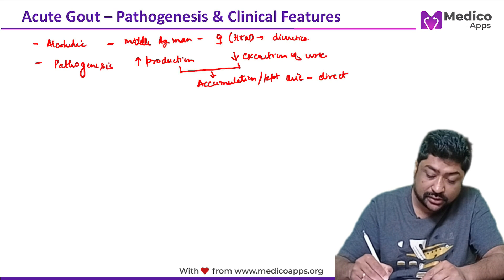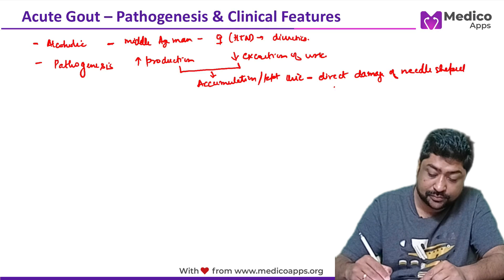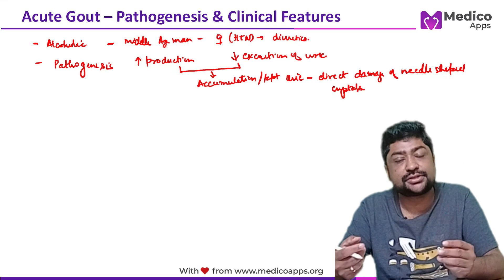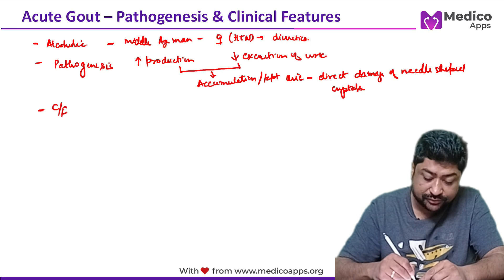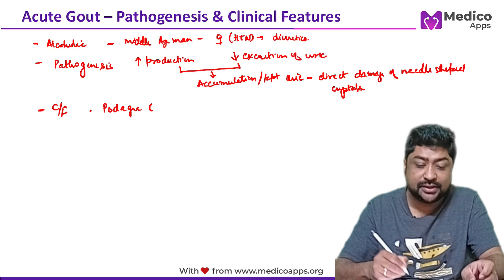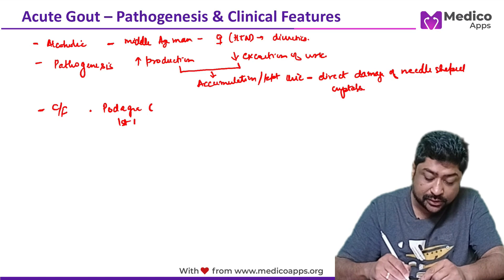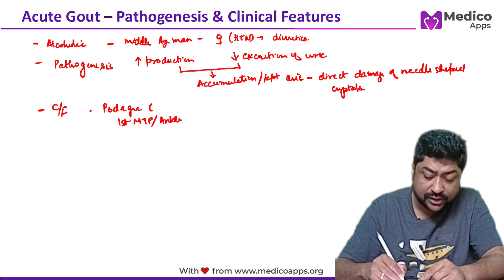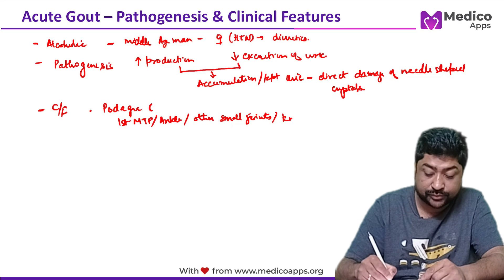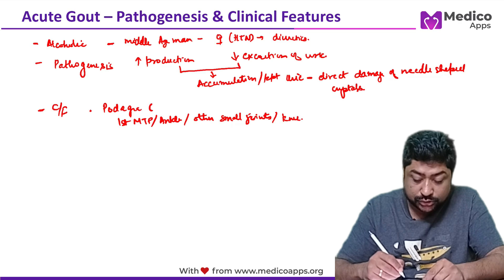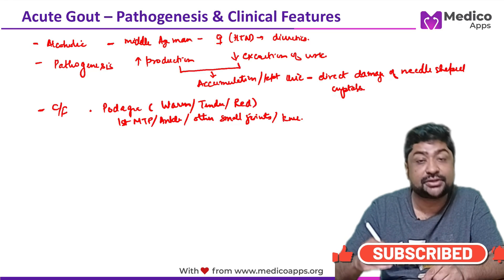Regarding clinical features, remember the mnemonic PUDACA — there will be signs of inflammation. The common joints involved include the first metatarsophalangeal joint as the most common, followed by ankle joints and other small joints. Knees can also be involved, so don't assume knees cannot be affected. The joints will be warm, tender, and red — signs of inflammation will be present.